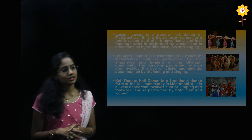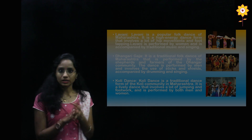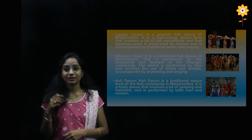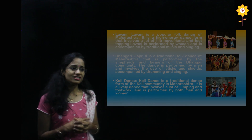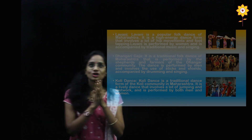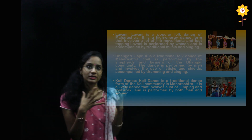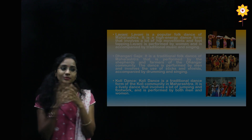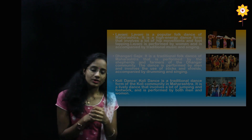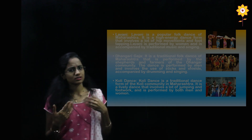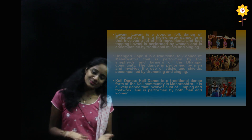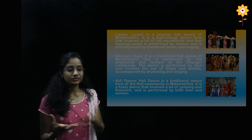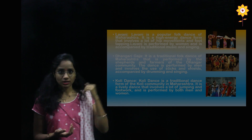Dhangari Gajha is a traditional folk dance of Maharashtra performed by the shepherds and farmers of the Dhangar community. The dance is performed by men and involves the use of stakes and shields, accompanied by drumming and singing. Kohli dance is from the Kohli community — it is a very lively dance involving lots of jumping and footwork, performed by both men and women, showcasing their daily life activities through the dance.